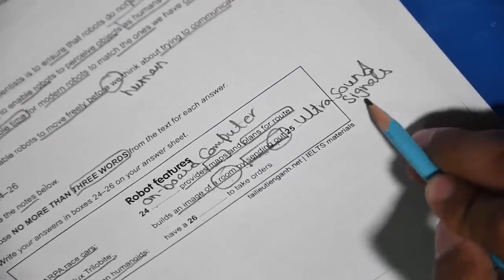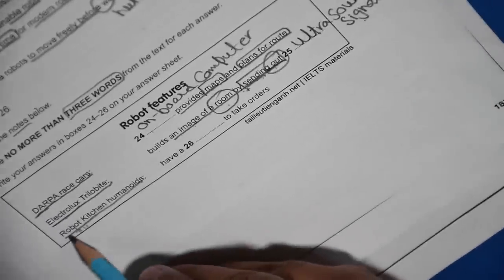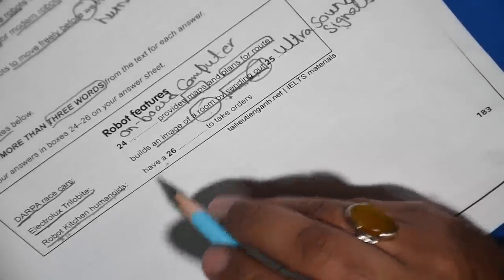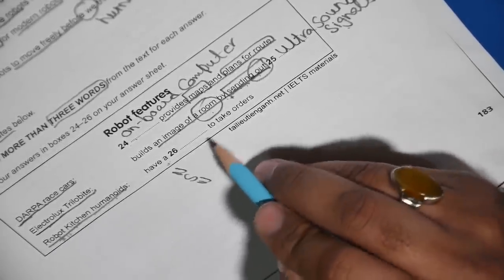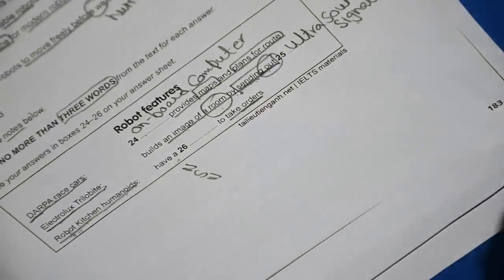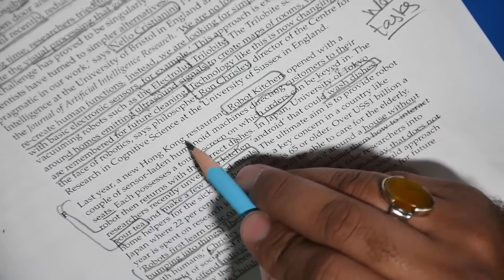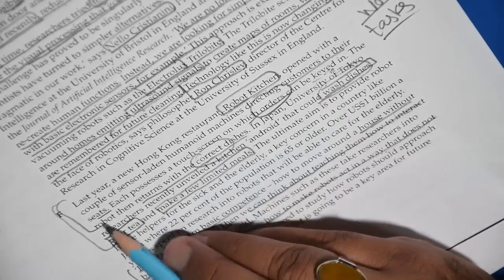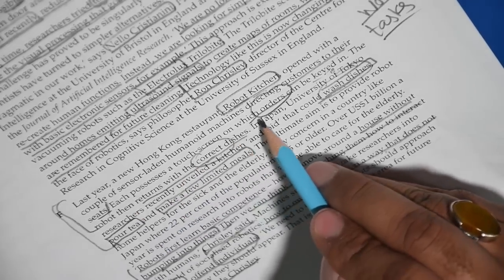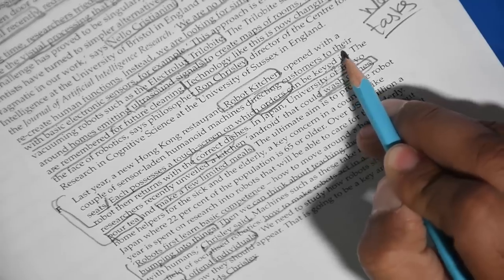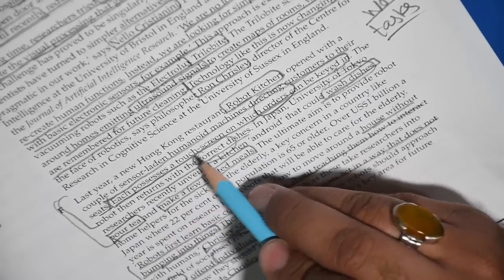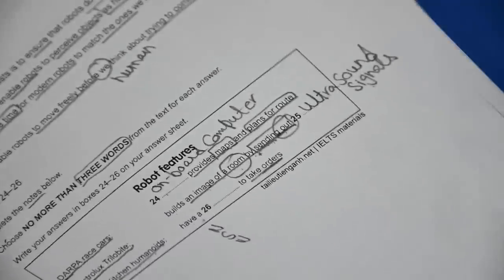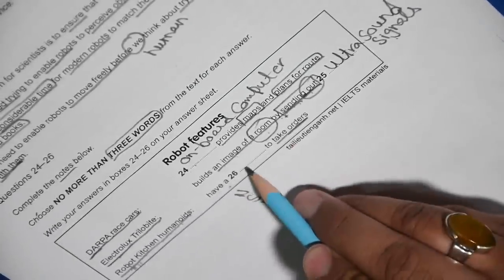Okay, robot kitchen. I know where robot kitchen is. Robot kitchen, humanoids have a, our means noun, our means singular noun to take orders. Yeah, we read about taking orders and all that stuff. Okay, let's just go back and see. Yes, this is robot kitchen, all right, Hong Kong restaurant. And then they are talking about robot kitchen, humanoid, open with a couple of sensors and humanoid machines directing customers to their seats. Okay, now we need to read about orders. Each possesses a touchscreen on which orders can be keyed. Answer is here in this sentence. There is the answer. Each possesses a touchscreen on which orders can be keyed in.